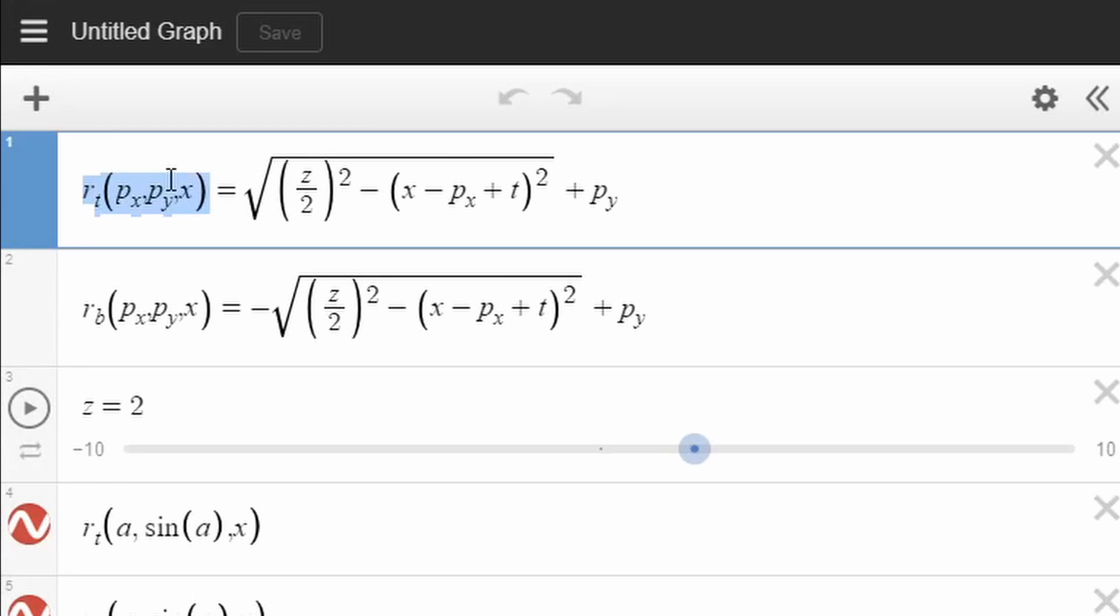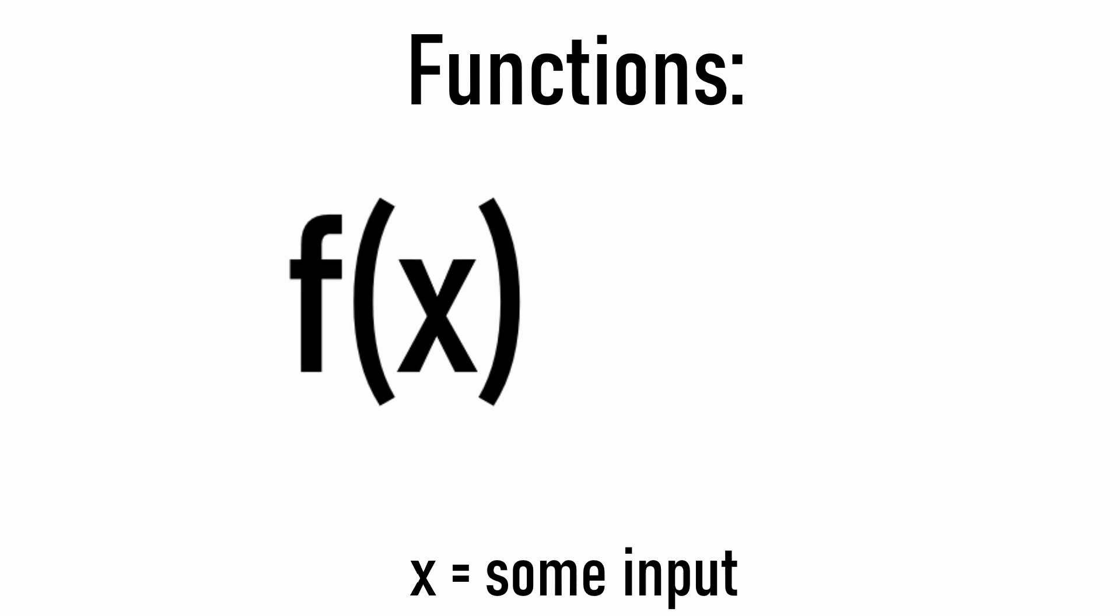We can make it a lot more clear as to what these lines are doing by using functions. Functions in Desmos are going to be very handy. A mathematical function takes in an input and does some work on that input. It could be squaring it, adding one, dividing it by two, or whatever else.